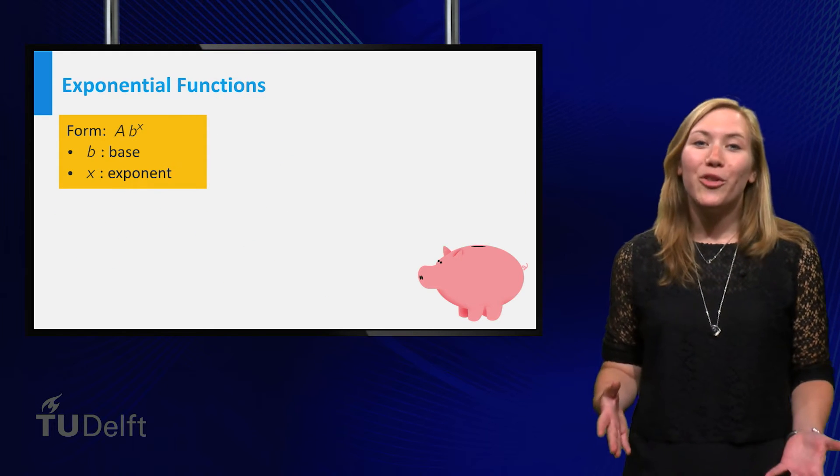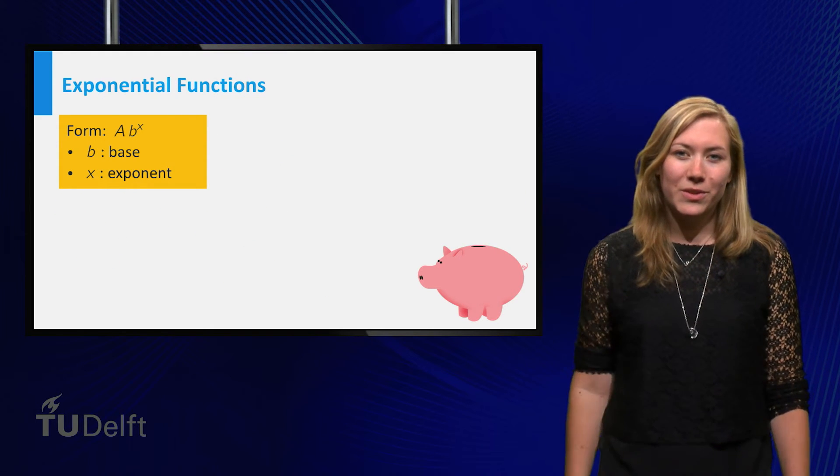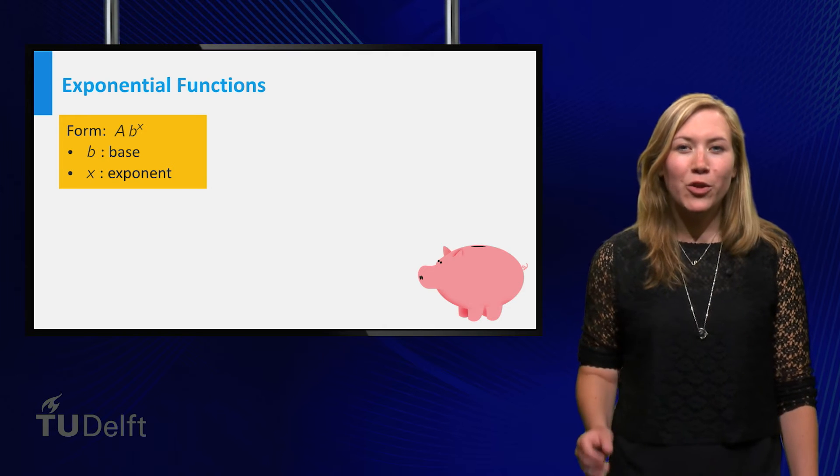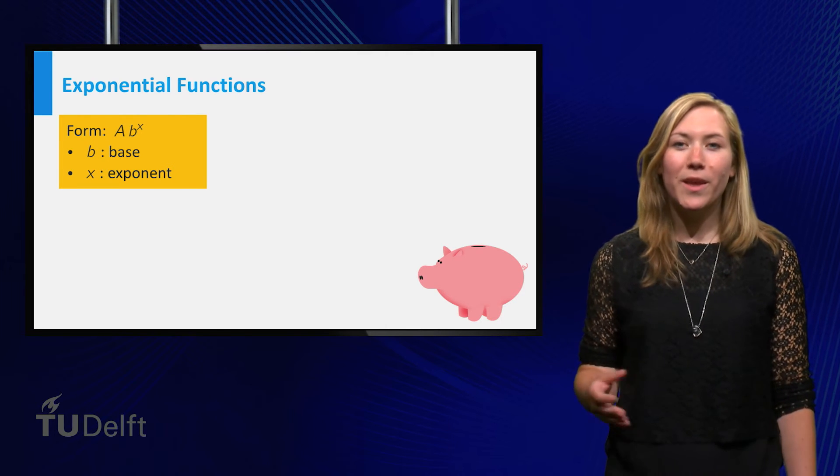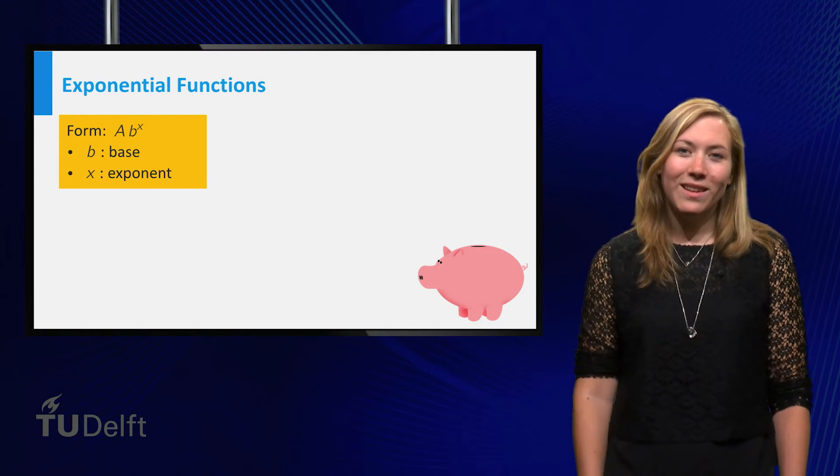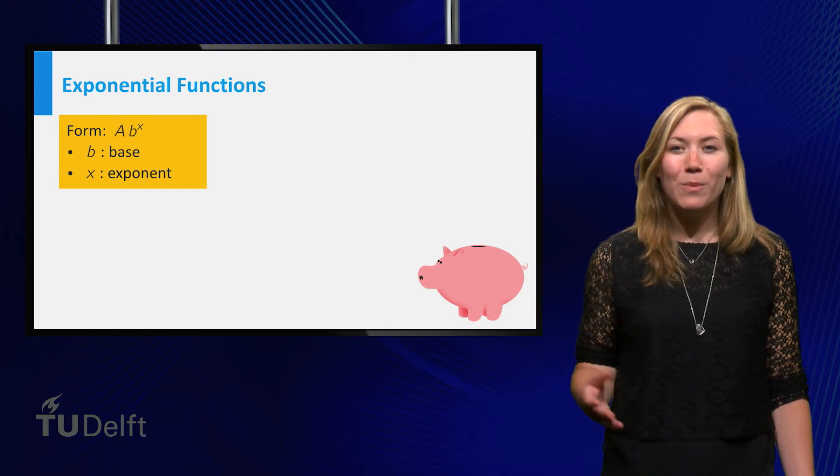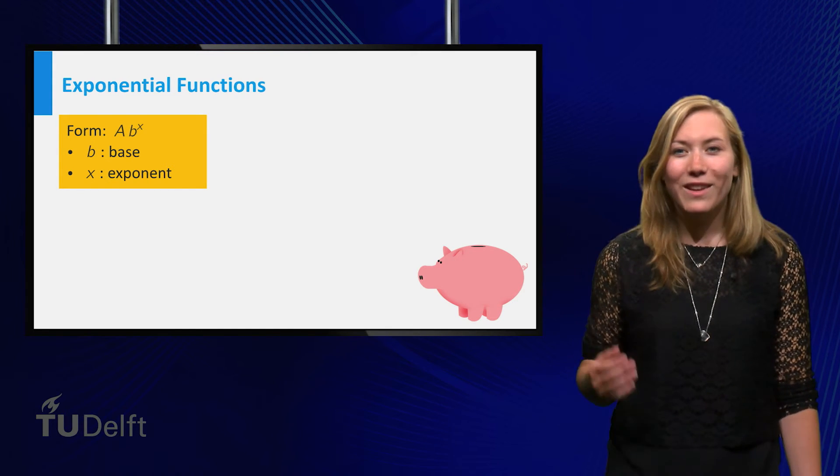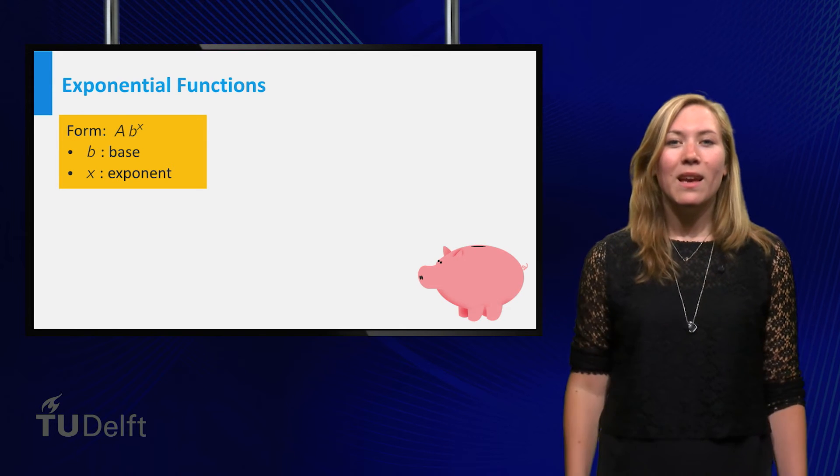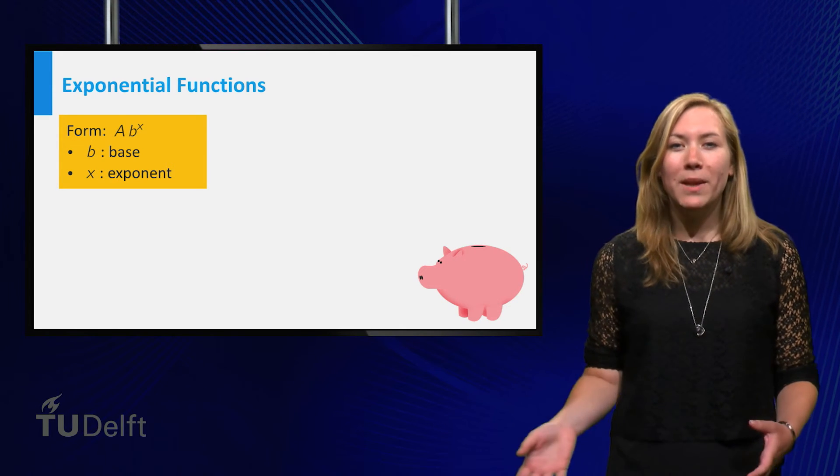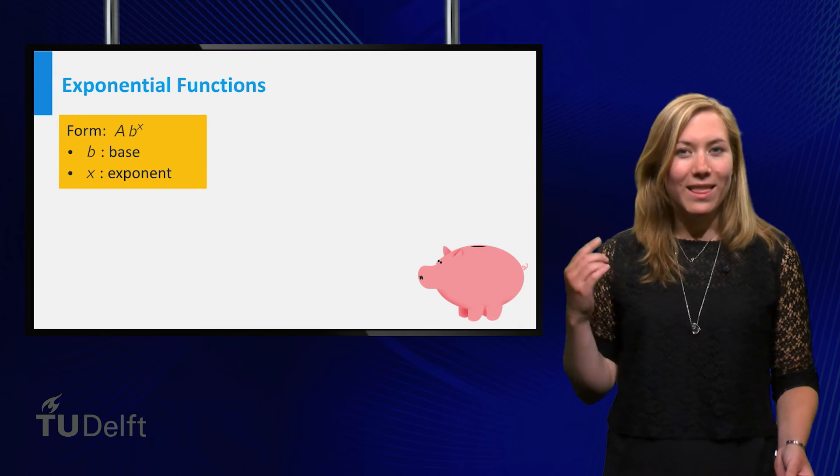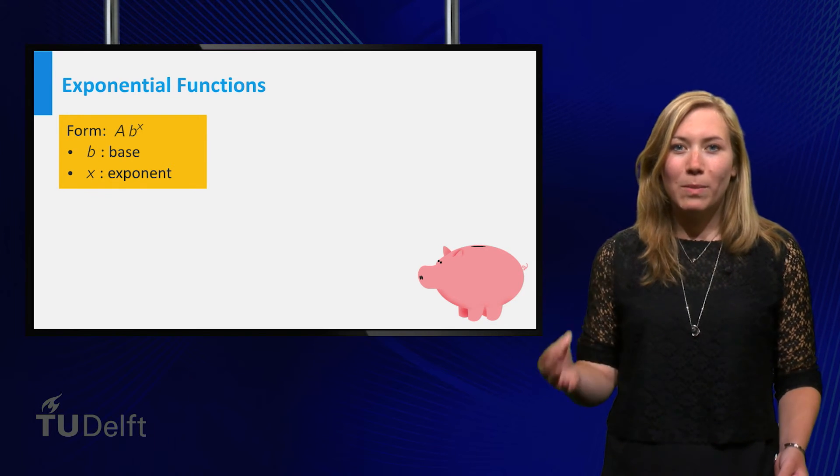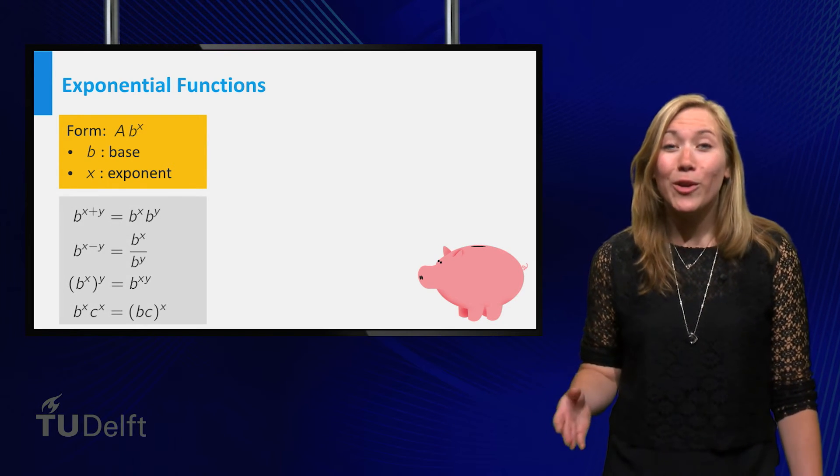We also considered exponential functions. Exponential functions describe many processes of growth and decay. An exponential function a times b to the power x has base b and exponent x. Exponentiation is repeated multiplication, and thinking about it in that way explains the important rules of calculation.